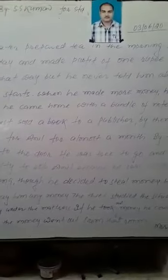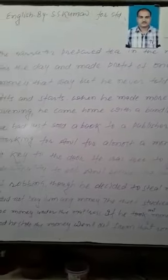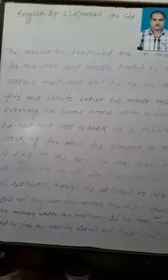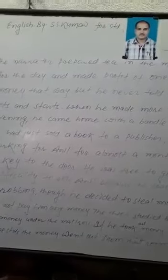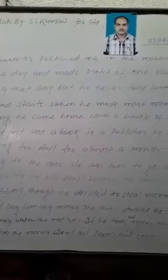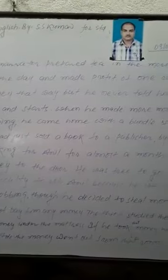Anil made money by fits and starts. When he made more money, he would start enjoying himself. One evening he came home with a bundle of notes and told the narrator that he had just sold a book to a publisher. By then the narrator had been working for Anil for almost a month, and Anil had given him a key to the door — he was free to come and go.